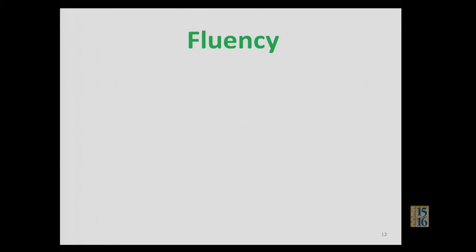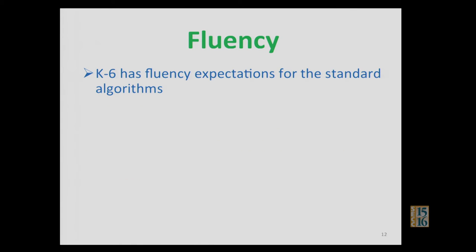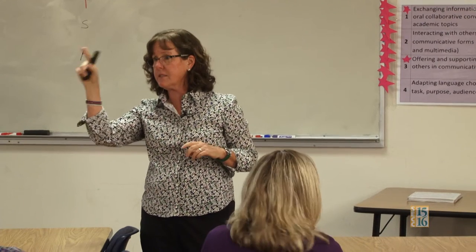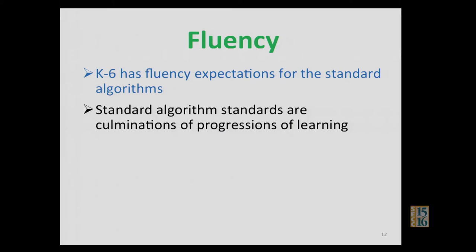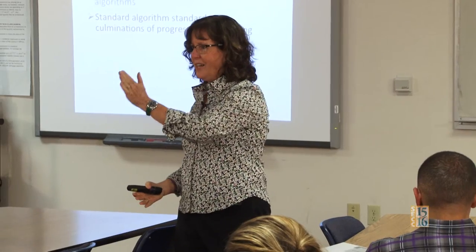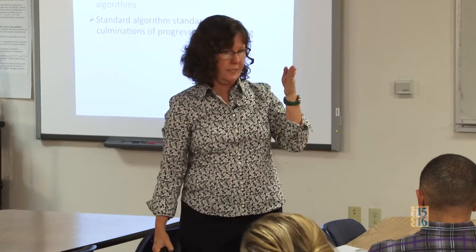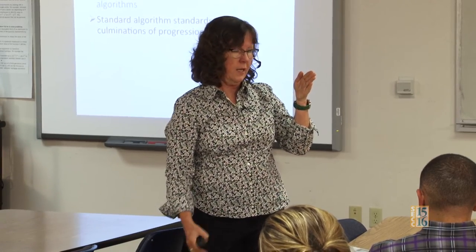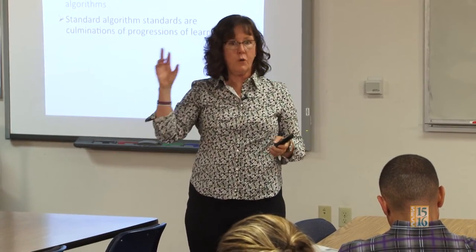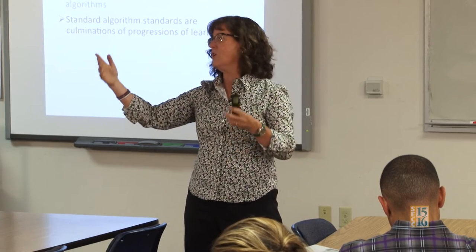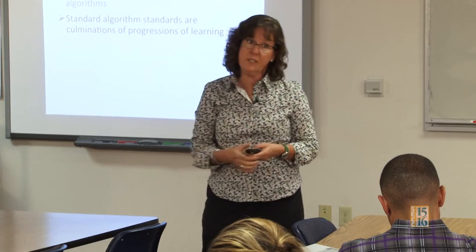K through 6 has fluency expectations for the standard algorithm — yours is division, long division. The standard algorithm is the end of the line. Traditionally, the standard algorithm is the first thing kids see and they don't have a chance at understanding that shortcut. The standard algorithm is the end of a progression of learning all about division. So the idea is that when the standard algorithm shows up, kids go, 'Okay, this makes sense,' because long division is a massive shortcut. If we have to use things like mnemonic devices, we know kids are not understanding.